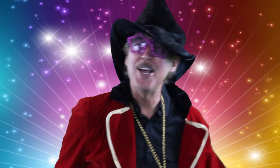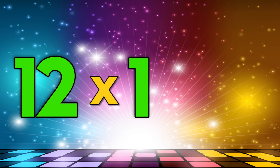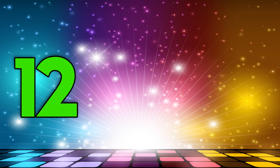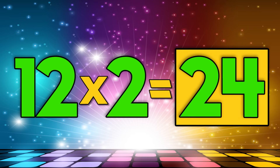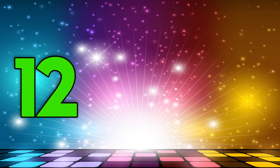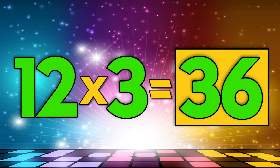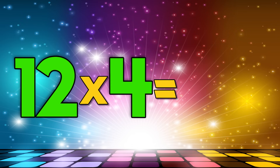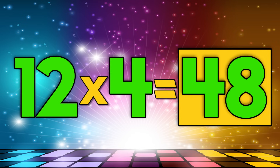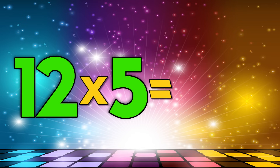One dozen roses, two dozen eggs. You've got to know how many that makes. To know quick how many inside, it's number twelve you multiply. Twelve times one is twelve, twelve times two is twenty-four, twelve times three is thirty-six, twelve times four is forty-eight, twelve times five is sixty.